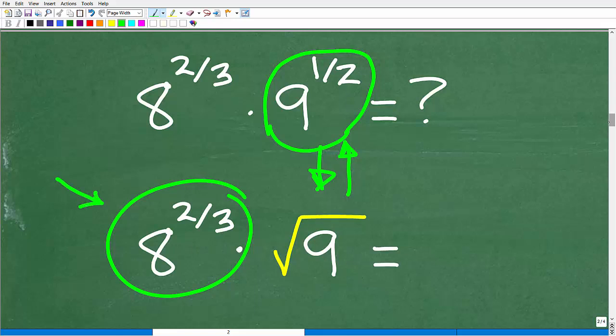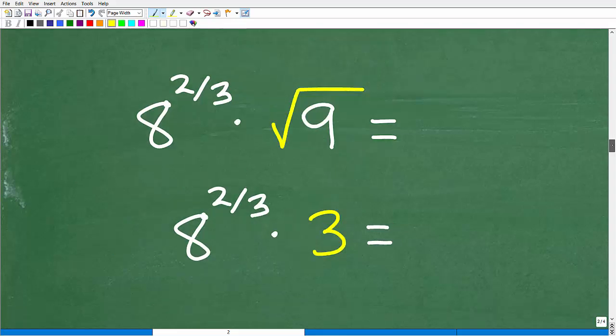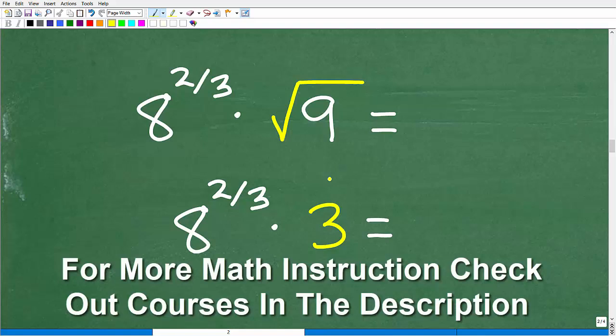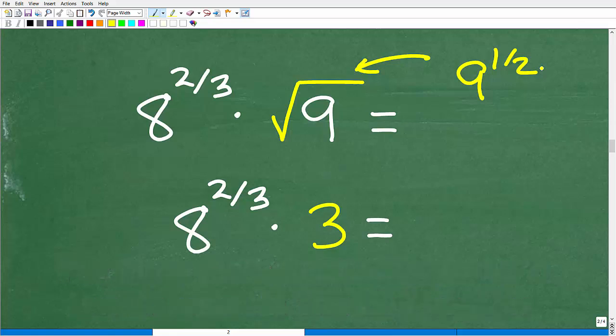Let's go ahead and get into the rest of this problem. Here we know that the square root of 9 is 3. And remember the square root of 9 is the same thing as 9 to the 1/2. So we have our brain working in terms of looking for rational exponents and thinking about a radical, and then looking at a radical and thinking about a rational exponent.